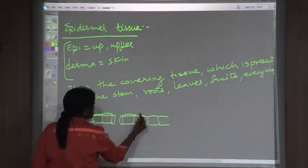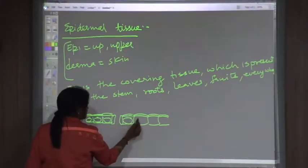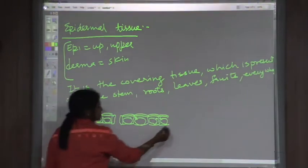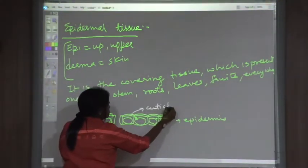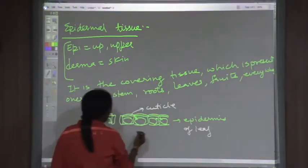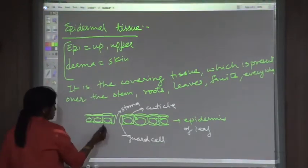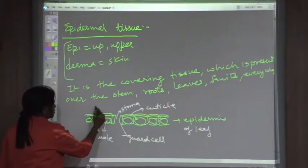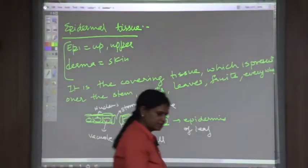The epidermis is covered by a thin layer of cuticle which prevents evaporation of water or transpiration, reducing the transpiration rate. There are stoma openings, and these openings have guard cells. The guard cells in the epidermis may have chloroplasts, whereas other epidermal cells will not — other cells are colorless. Epidermal cells may have a large vacuole since they are differentiated cells. They have a nucleus and are live cells.